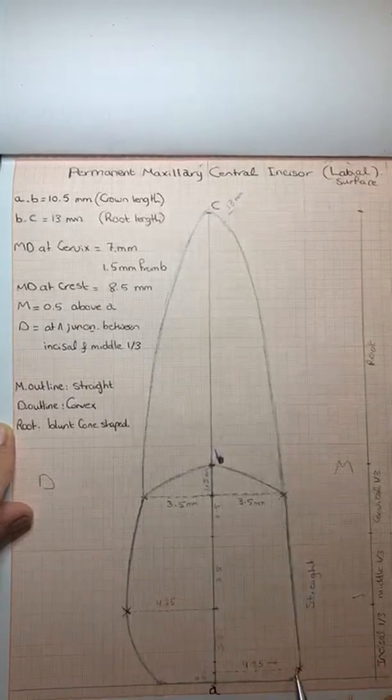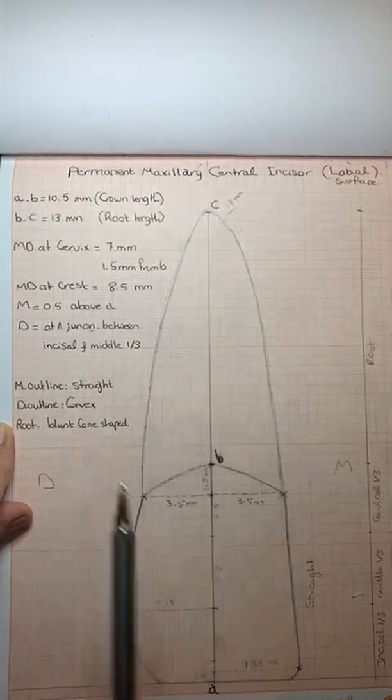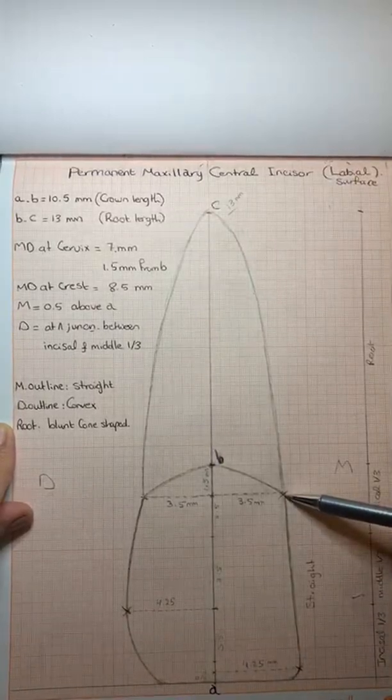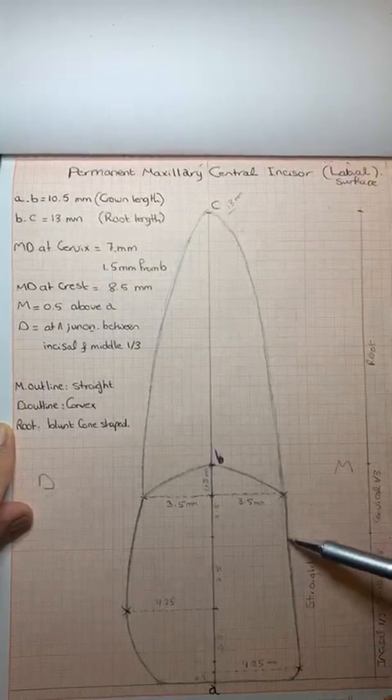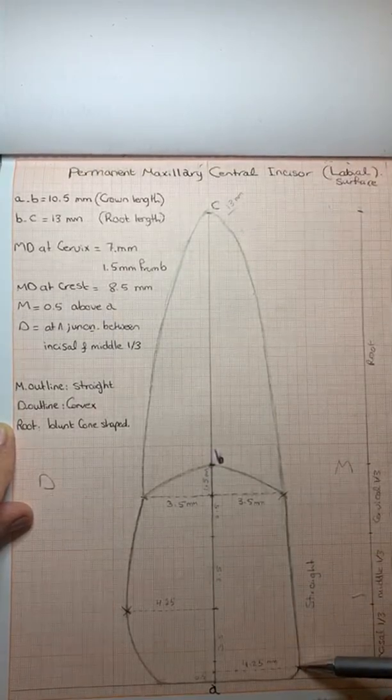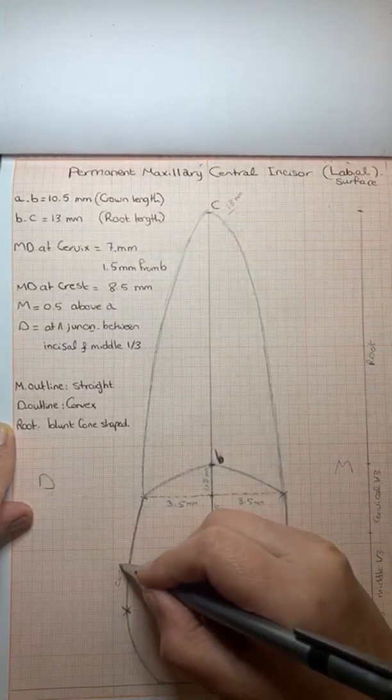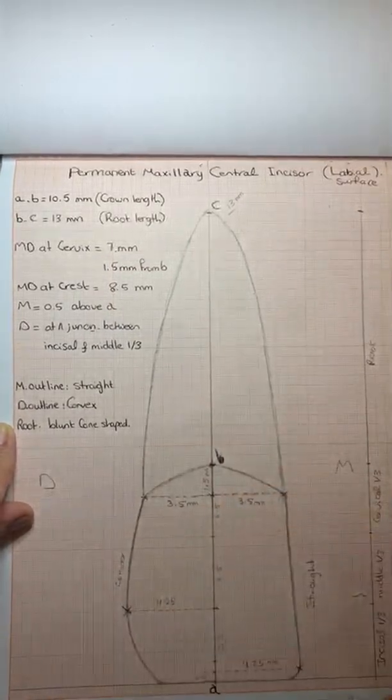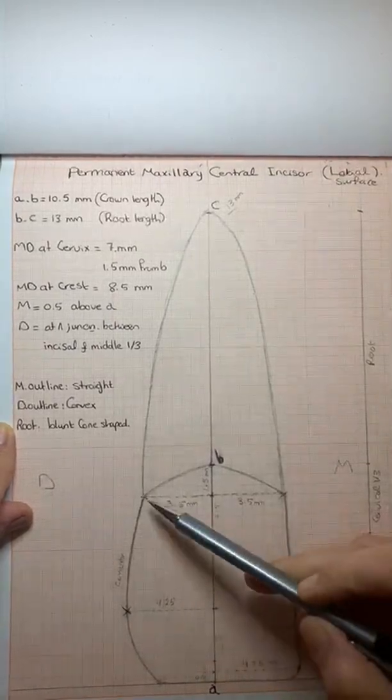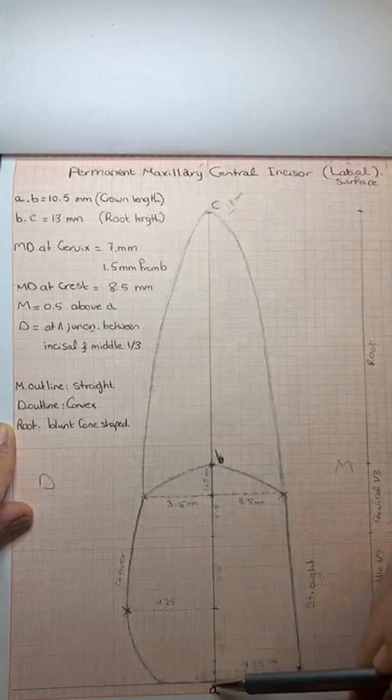By those points, we can now finish the drawing. The third step is to represent the outline. The mesial outline must be straight from the cervix point to the crest point by drawing an almost straight line. The outline must be straight from the cervix point to the crest, and then continue with the convexity up to the incisal edge. By this way, it is a curved line or convex line. The crest of this curved line will be at the junction between the incisal and middle third.